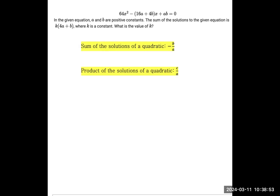But for the sum, negative B over A, if this is the A, this is the B, and this is the C in terms of the three positions in a quadratic: A, B, and C.